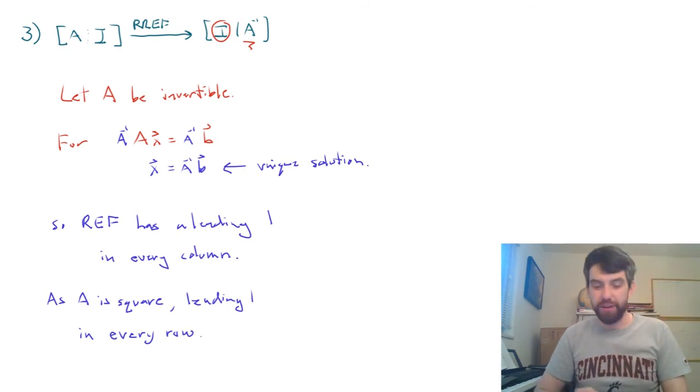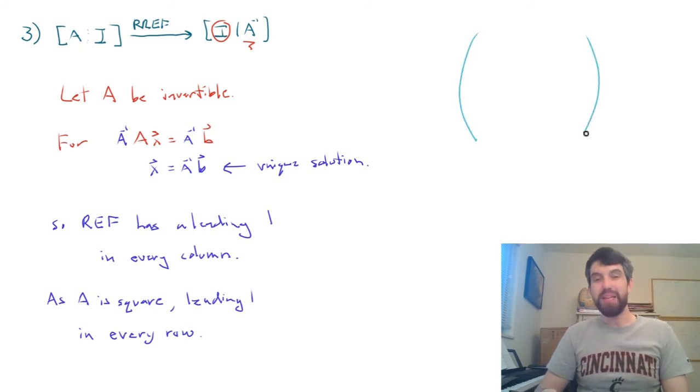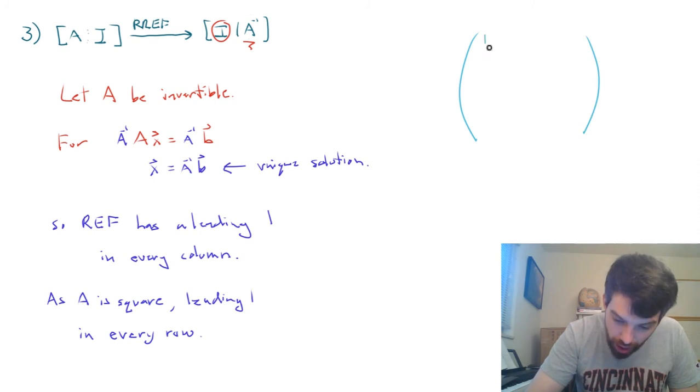Alright. Now I'm going to give just sort of a representative example of this. Okay, so I've got a matrix that looks like this. Maybe it's going to be 4×4 in my example, but we could do more if we wanted to. And I'm saying that in every single row, in every single column, there's a leading one. So I think it has to look like this.